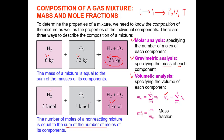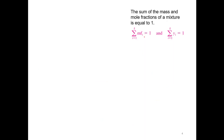Based on this, we can calculate the mass fraction of an individual component: mass of that component divided by mass of the mixture. Similarly, the mole fraction of an individual component is the ratio of the number of moles of that component to the number of moles of the mixture. Note that the sum of all mass fractions equals 1, and the sum of all mole fractions also equals 1.